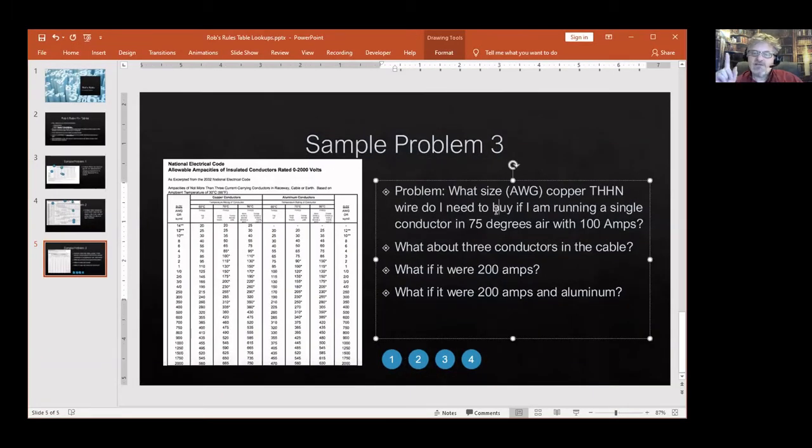The problem is what size, in this case we're using AWG as the American wire gauge, the standard size, copper THHN wire do I need to buy if I'm running a single conductor in 75 degree air, which is your generic standard for a reasonably temperature controlled environment like an indoor environment, with 100 amps of power. 100 amps is a lot of power. A normal whole house is set up with 200 amp service so 100 amps is half of what a house would normally take.